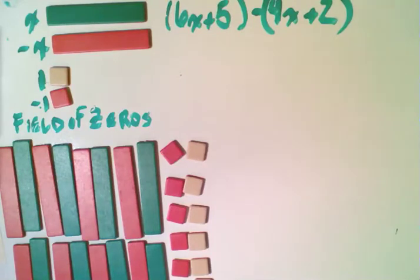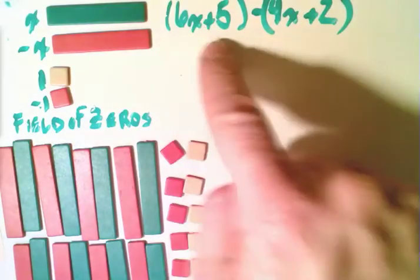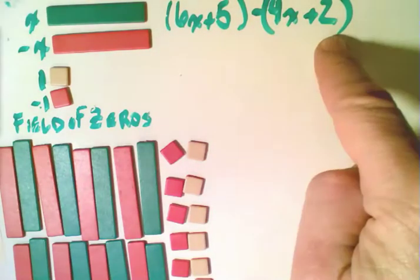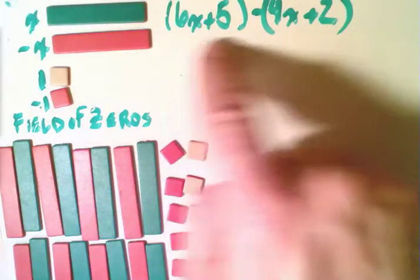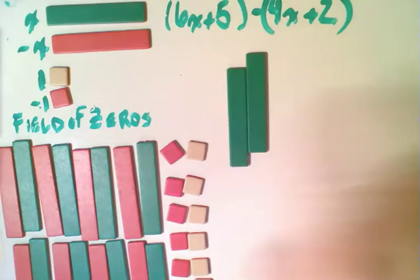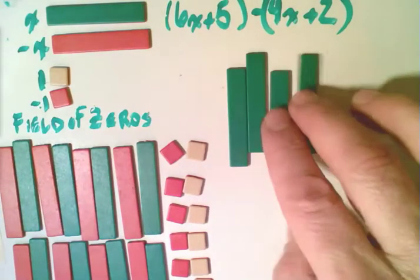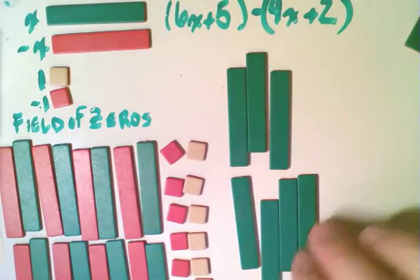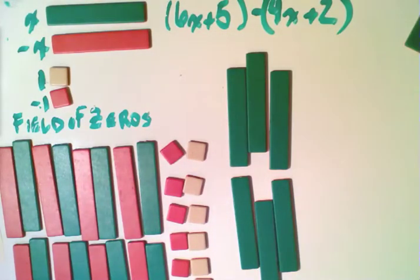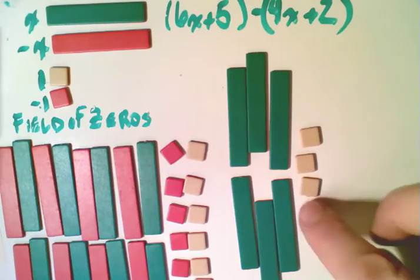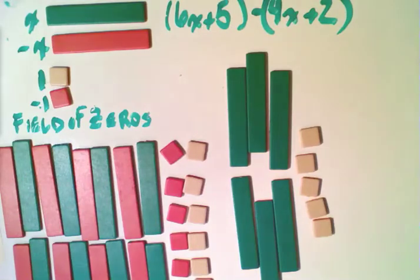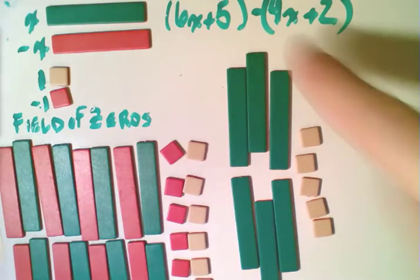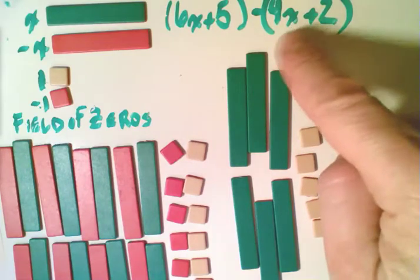And so in order to subtract here, we are going to start with the idea that we have this to start with, and we're going to take this away. So let's get this to start with. We want 6x, and there's 4, and so there's our 6, one too many, 6x there. And we're bringing in the 5 units, so we have 6x plus 5. And so this tells us to take away 4x plus 2.